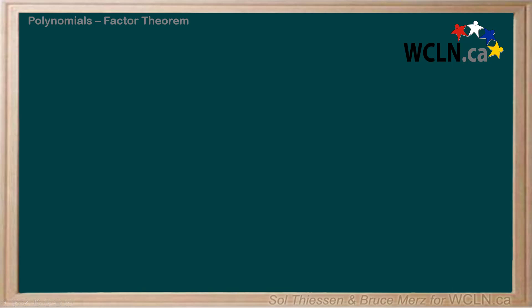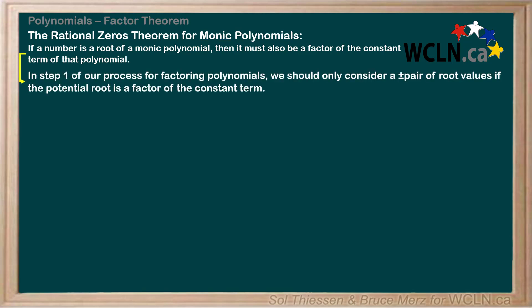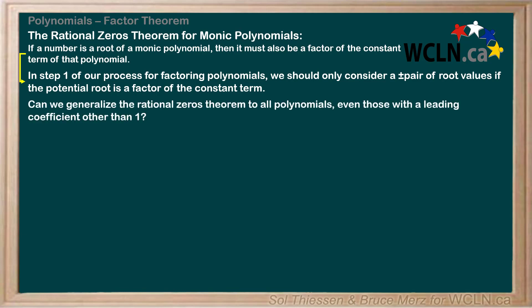In the last video, we saw how to apply the rational zeros theorem for monic polynomials. If a number is a root of a monic polynomial, then it must also be a factor of the constant term of that polynomial. A monic polynomial is one whose leading coefficient is 1. This led us to conclude that in step 1 of our process for factoring polynomials, we should only consider a plus or minus pair of root values if the potential root is a factor of the constant term. Can we generalize the rational zeros theorem to all polynomials, even those with a leading coefficient other than 1?